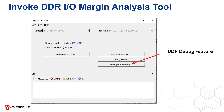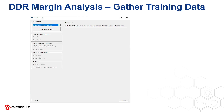Click on the selection called Debug DDR Memory. The DDR IOMargin feature appears. At the top-left dropdown, you can select from multiple DDR interfaces to analyze if there is more than one in your design. That's step one.